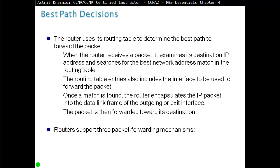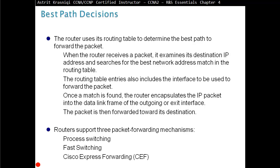Routers support three packet forwarding mechanisms: process switching, fast switching, and Cisco Express Forwarding (CEF). When a packet arrives, the router examines the destination IP address and looks for the longest match in the routing table — the longest match is preferred. The routing table then tells the router which exit interface to use, such as FA0/0, and the router encapsulates the packet with new Layer 2 information, changing source and destination to the next hop.